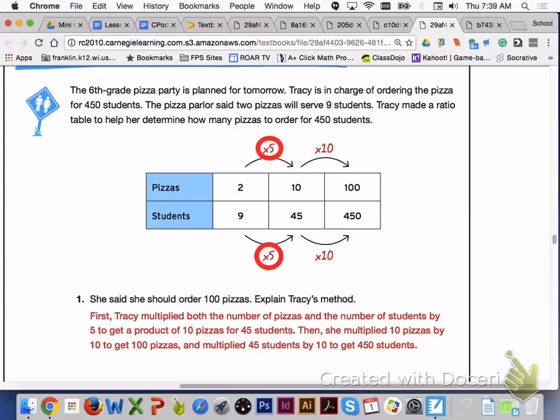First, Tracy multiplied both the number of pizzas and the number of students by 5 to get a product of 10 pizzas for 45 students. So her scaling up factor was 5. Then she multiplied 10 pizzas by 10 to get 100 pizzas and she multiplied 45 students by 10 to get 450 students. So her scaling up factor is 10.